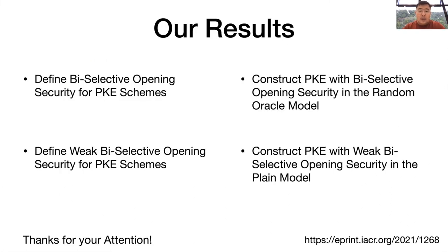To summarize, in this work we formally initiated the study of biased-selective opening attacks on PKE schemes. We gave different definitions to capture the attack in different settings, and constructed PKE schemes with different security guarantees from different assumptions. Technically, we presented a new primitive called the K-equivocable hash proof system, which may find further applications. Okay, that's all. Thanks for your attention.